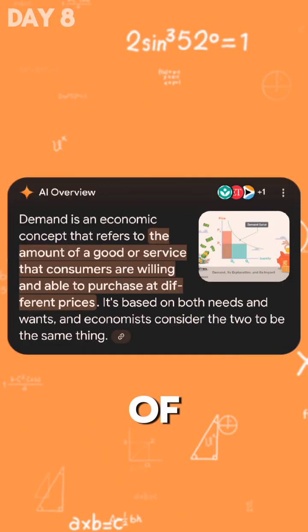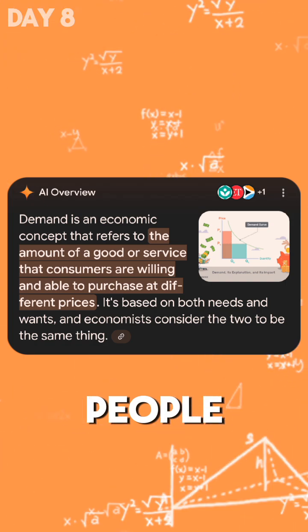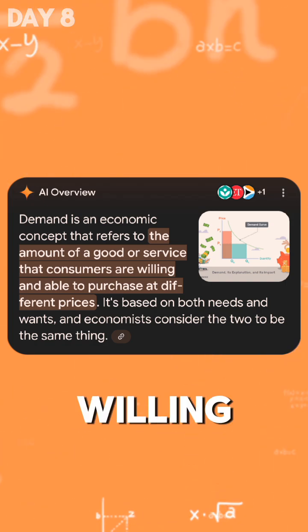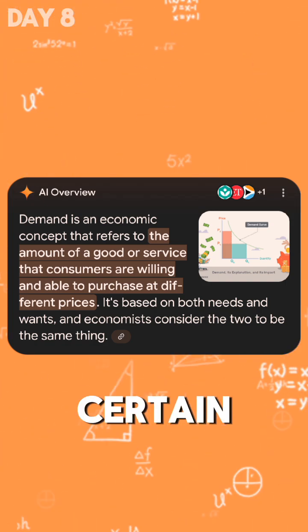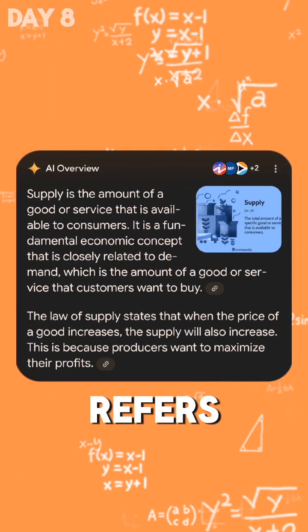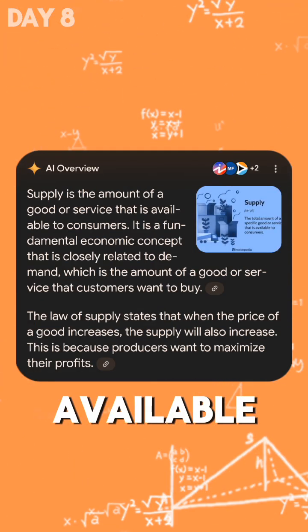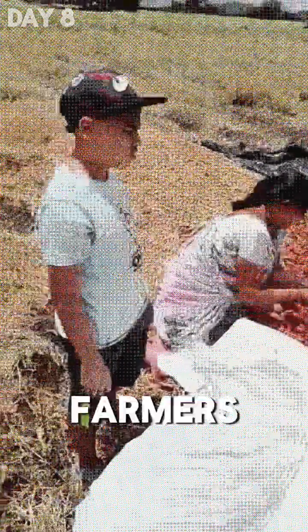Demand refers to how much of a product people want and are willing to buy at a certain price. Supply refers to how much of a product is available in the market.